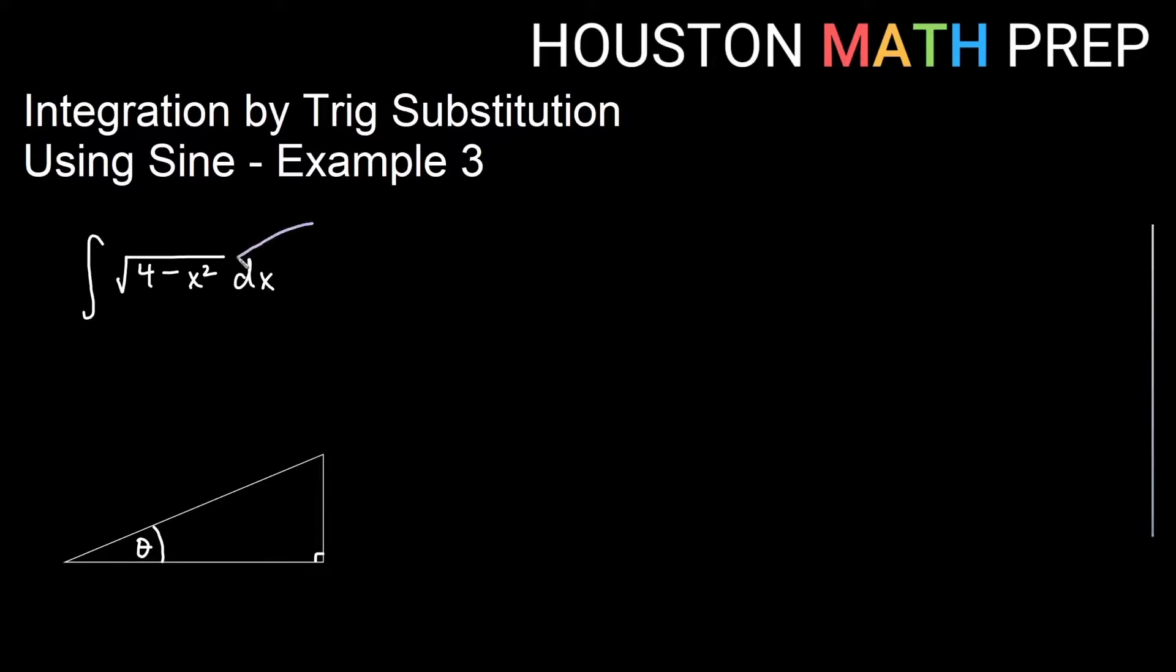We can probably see what's under the root as a squared minus u squared, a constant expression minus variable expression squared. So we will let u equal a sine of theta.